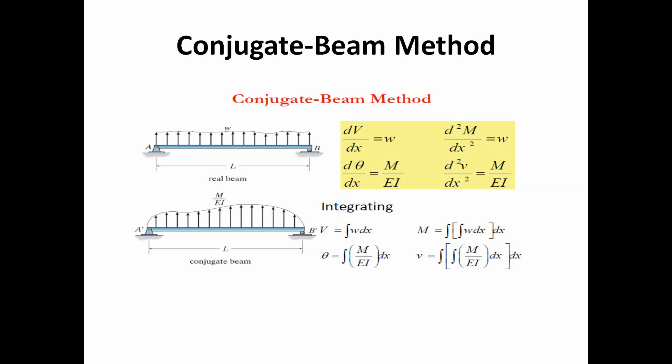In the conjugate beam method, we first discuss the relation between load and shear force, bending moment and load, and slope and moment. The partial derivative of shear force with respect to dx equals load W. d²M/dx² equals W, dθ/dx equals M upon EI, and d²δ/dx² equals M upon EI.